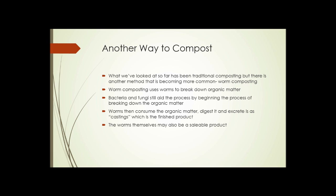Another way to compost. So we looked at creating a compost pile or using a tumbler, adding materials, aerating it, to create compost. But there is another way. And that's worm composting. Worm composting, as the name suggests, uses worms to break down organic matter. Bacteria and fungi still aid the process by beginning the process of breaking down the organic matter. So when you add organic matter to a worm composting unit, fungi and bacteria start operating on it first. It breaks it down a little bit, and then the worms start chewing through it. The worms then consume that organic matter, digest it, and excrete it as something called worm castings, which is the finished product of worm composting.